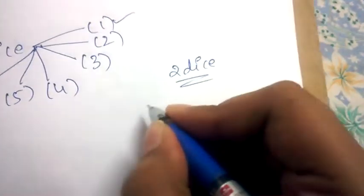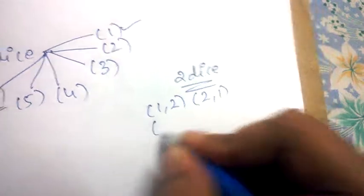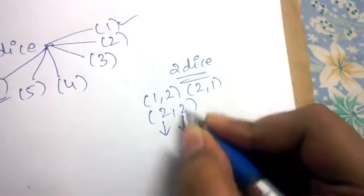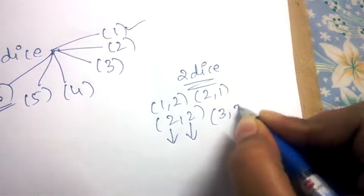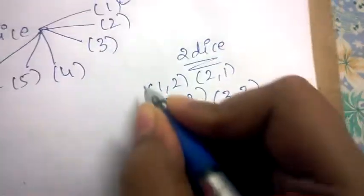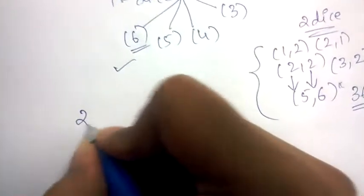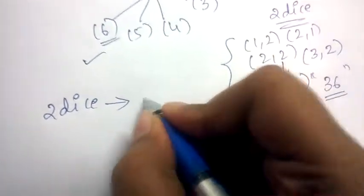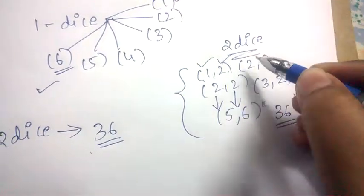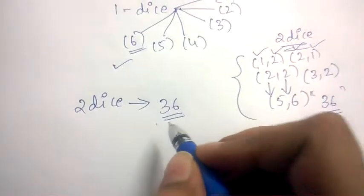Coming to two dice — you can get one-two, two-one, two-two, three-two, five-six, and so on. Totally you will have 36 different probabilities when you throw two dice. Like first dice gave one and second dice gave two, or first dice gave two and second dice gave one — like this you will have 36 different probabilities.